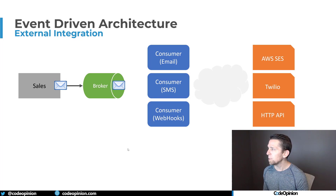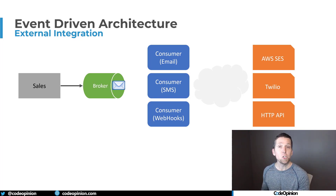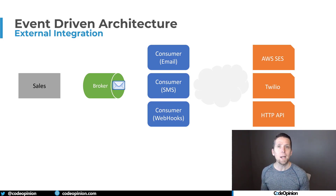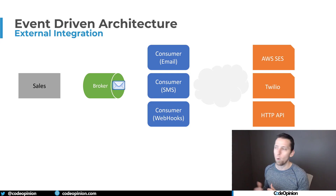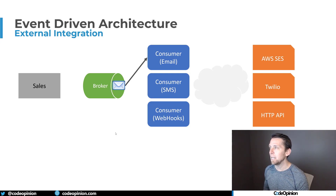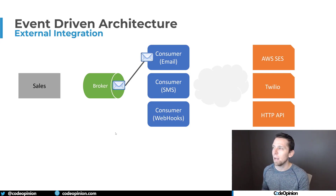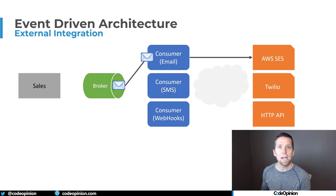To illustrate this, our sales service publishes that event to the broker — it's the producer, publishing to a topic. We have these three different consumers. Because they're all independent and temporally decoupled, sales is done — it's moved on to getting more orders. From there, each consumer independently picks up messages from that topic. They're subscribing to the topic, so our first consumer, email, can interact with AWS SES and send out the email.